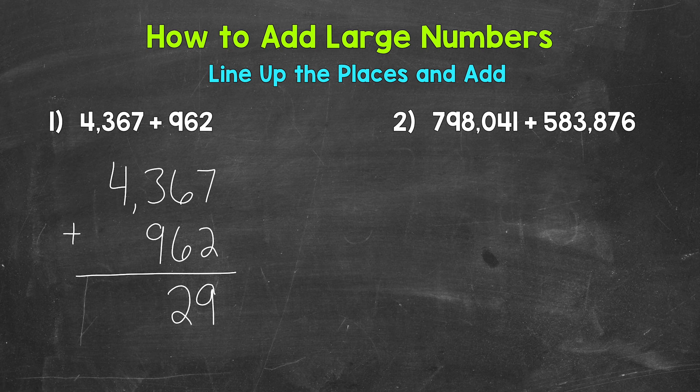Six plus six is 12, so put the two in the tens place and carry the one to the hundreds place. Technically we did 60 plus 60 because those sixes are in the tens place — 60 plus 60 is 120. The two from 120 goes in the tens place, and we carry the one from 120 to the hundreds place, because that one has a value of 100.